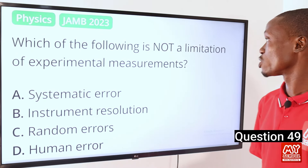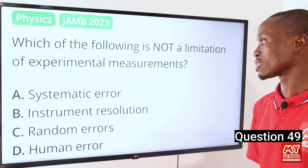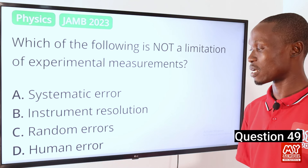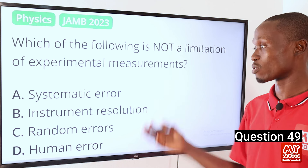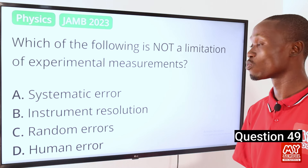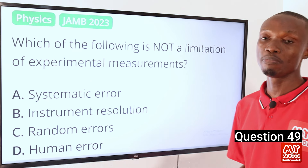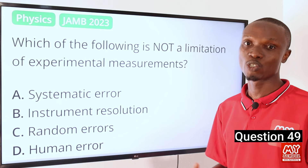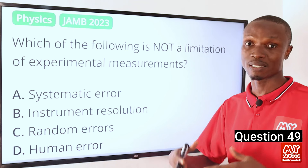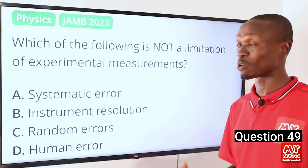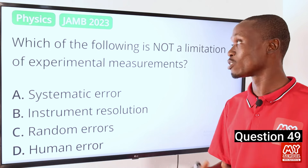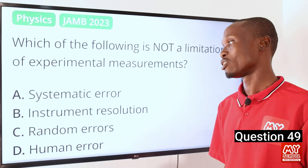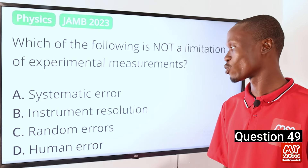Question 49. Which of the following is NOT a limitation of experimental measurement? Options: A, systematic error; B, instrument resolution; C, random errors; D, human errors. The answer is option B, instrument resolution. Instrument resolution means the smallest change in a measured quantity that can be detected by an instrument. Instrument resolution itself is not a limitation of experimental measurement, though it does affect the accuracy of a measurement.